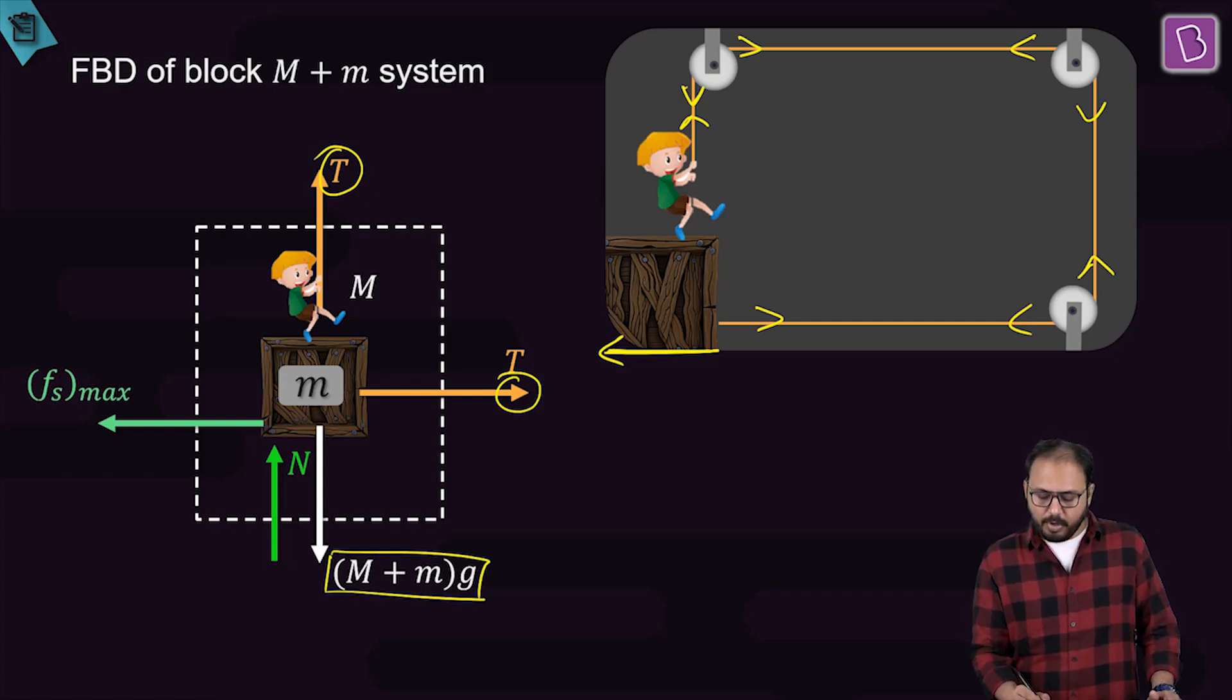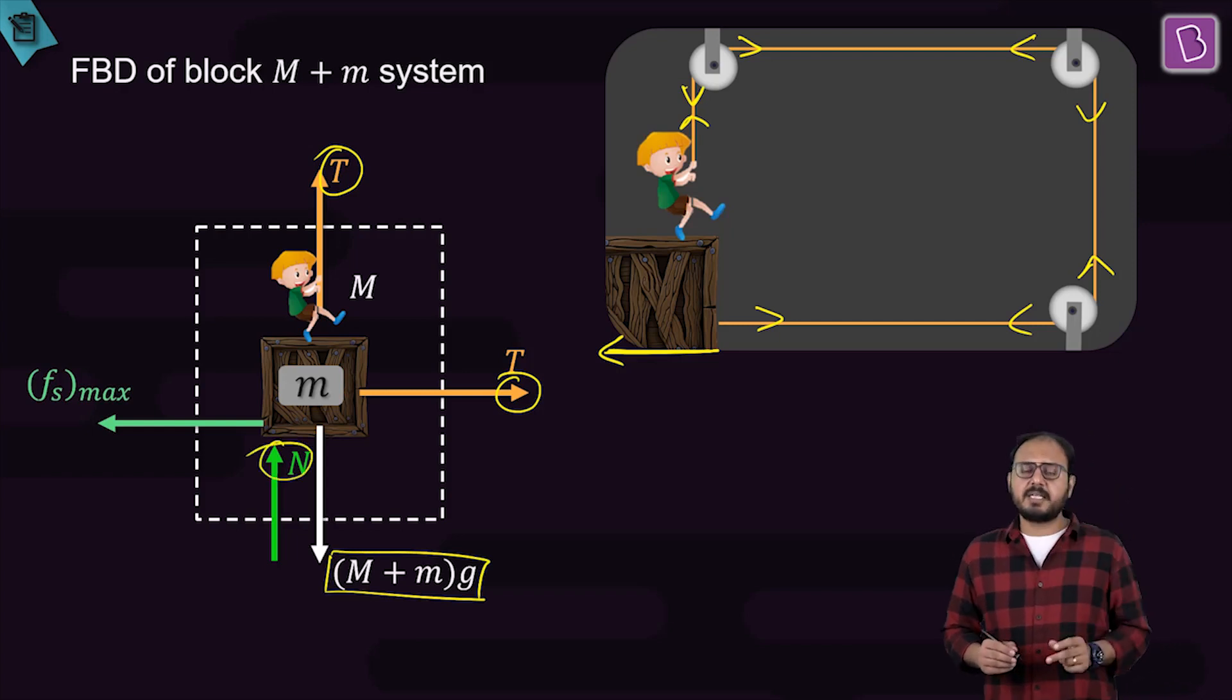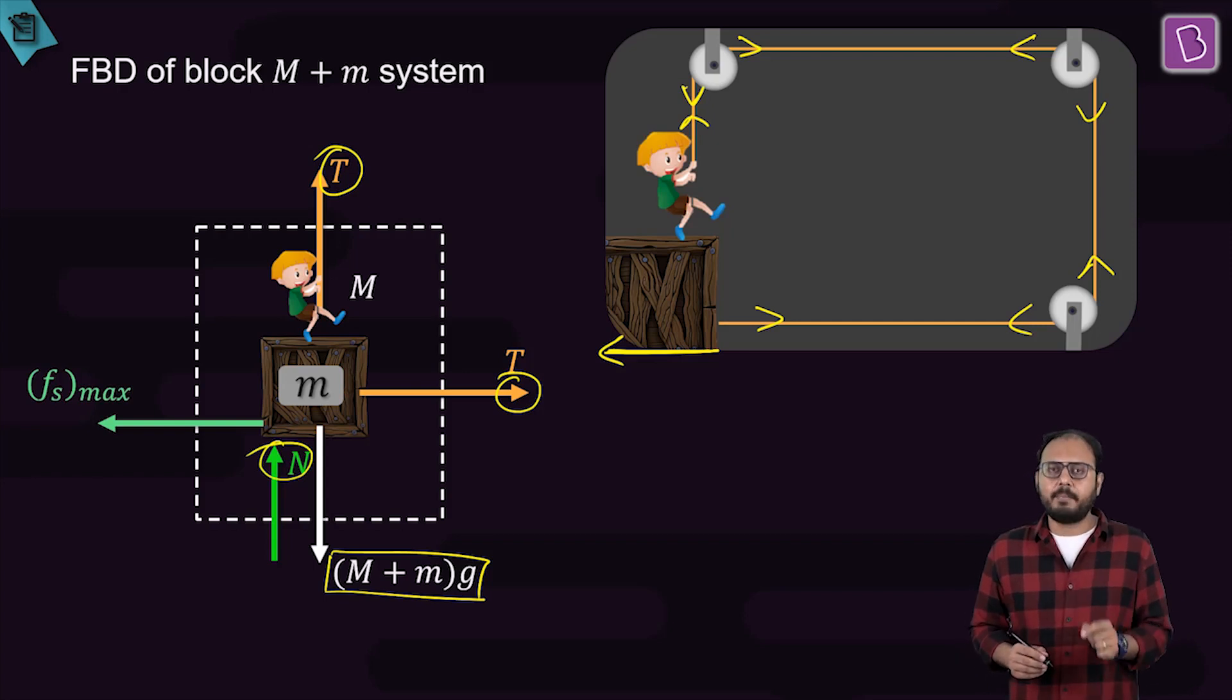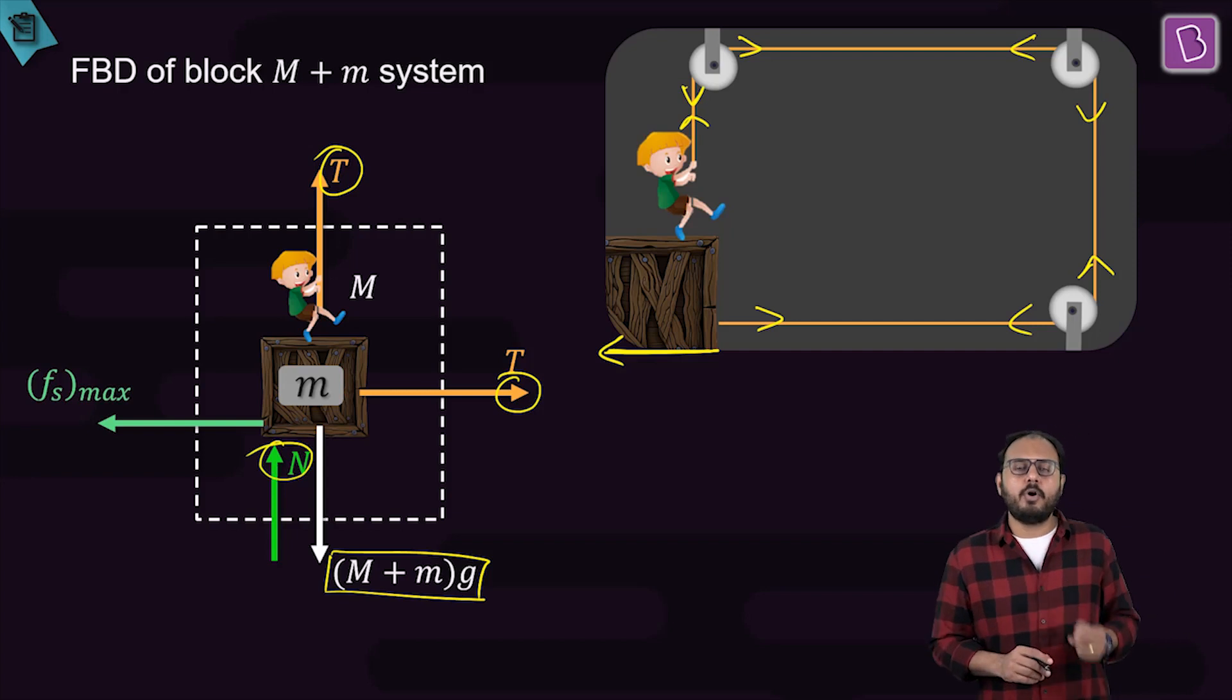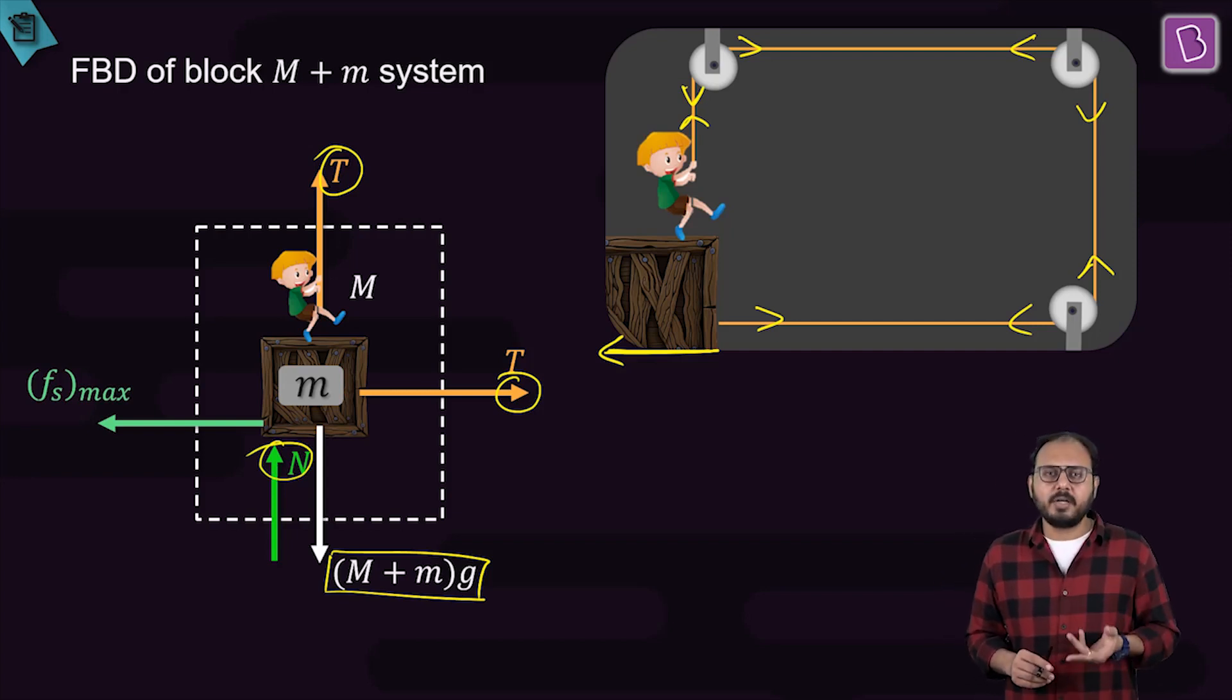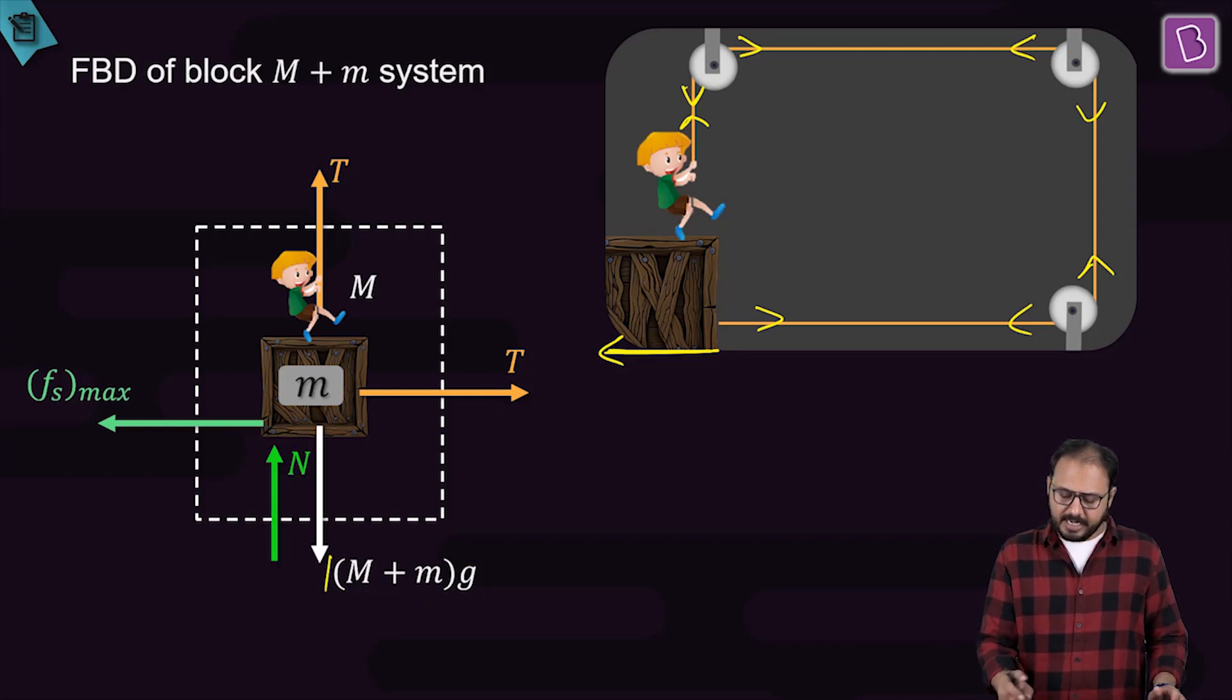Then I drew the normal reaction from the ground below as N. Do you realize I did not consider the contact force between the boy and the box? Why? Because they are in my system. So nor do I care about the normal force between the boy and the jack and the box. I also don't consider the friction between Jack and the box. Why? Because they all are internal forces and I don't need them.